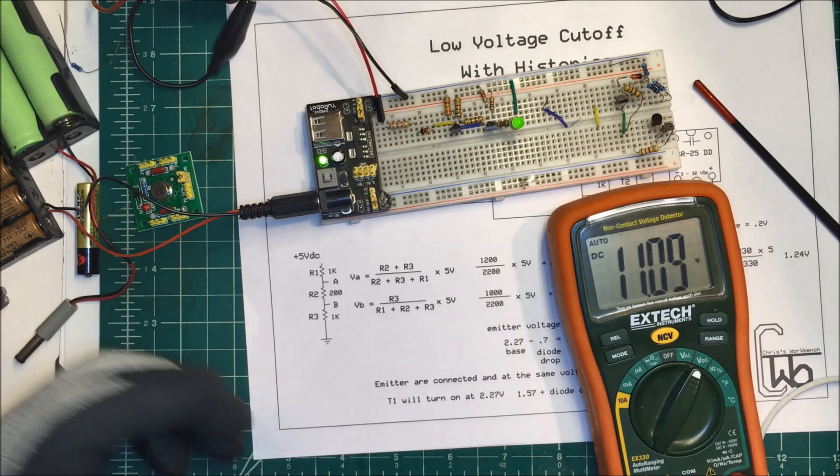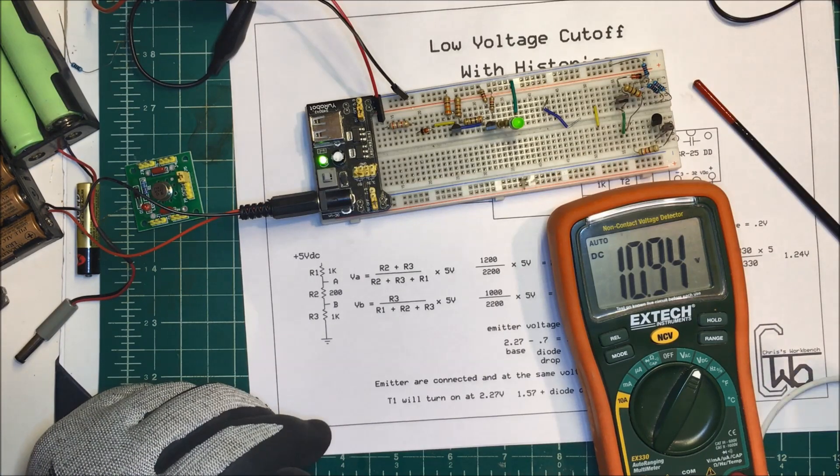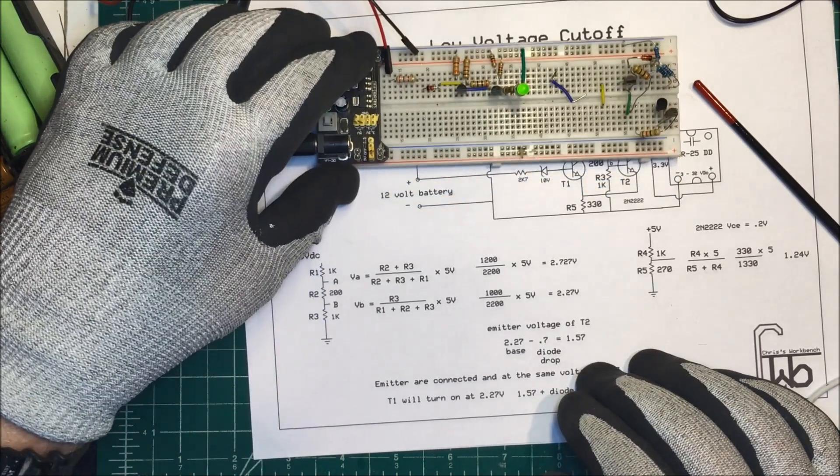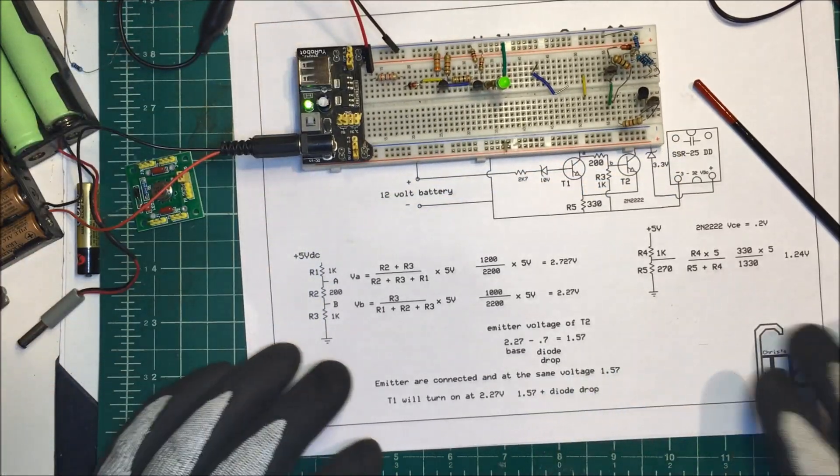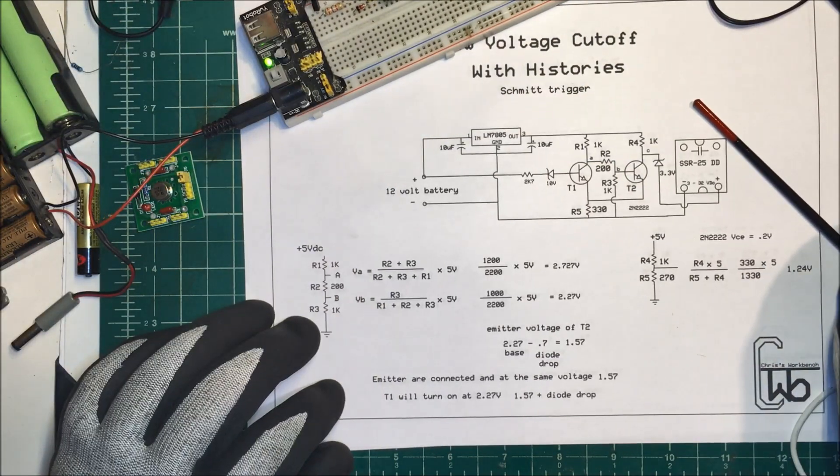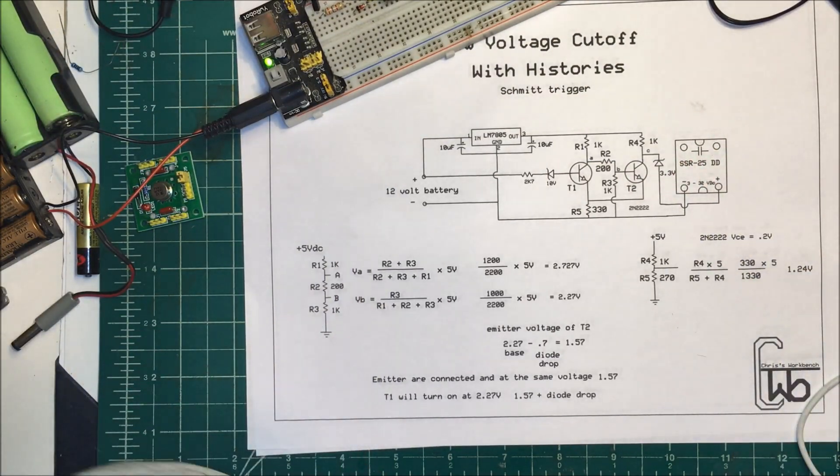So that seems to be working. I'm going to hook that up to my battery and see if that'll do the job. Anyway that's a low voltage cutoff using a Schmitt trigger, thank you.